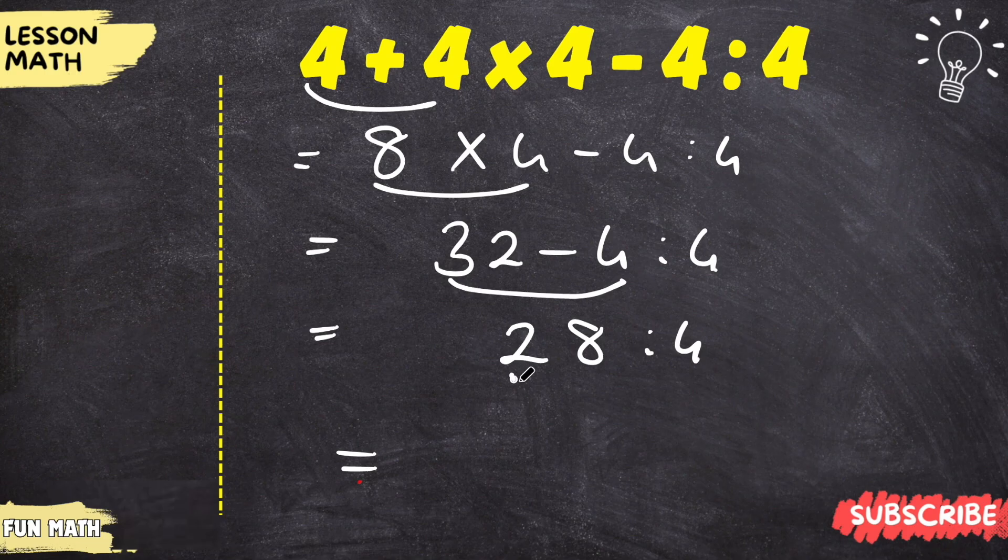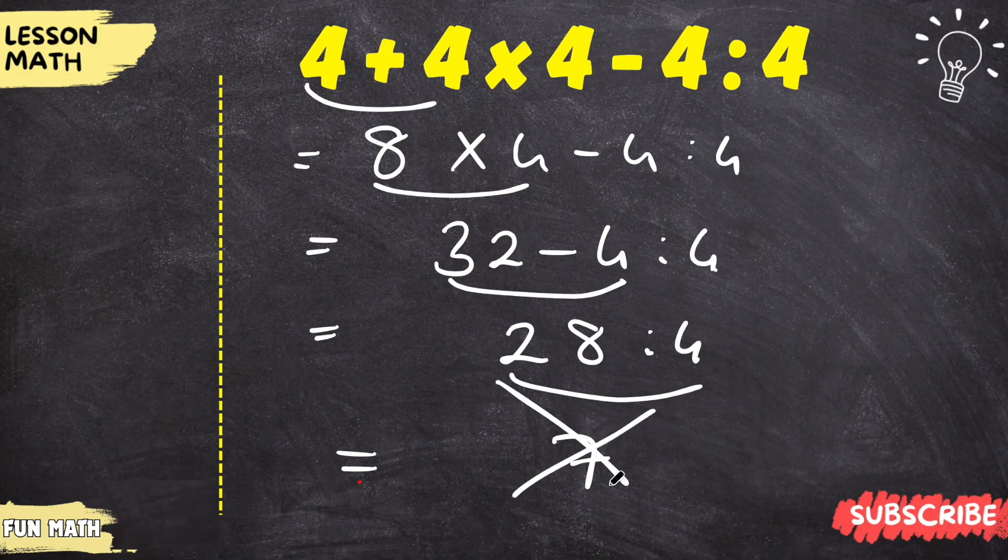If we do the last division, you could say divide 28 by 4 and the answer is 7. But if you solve the problem this way, you'll solve it incorrectly.